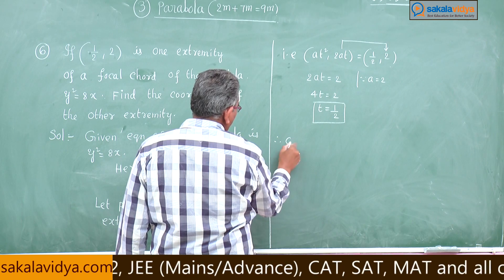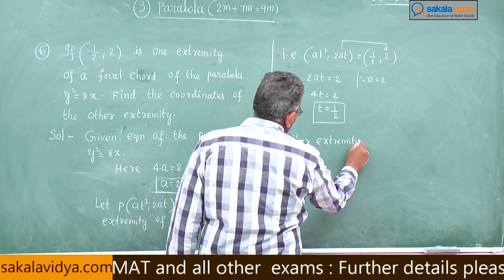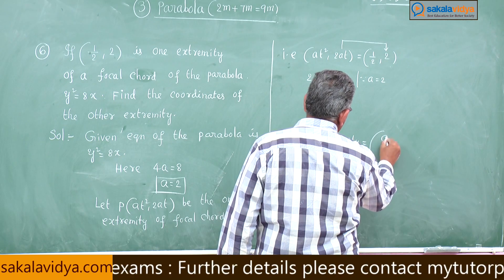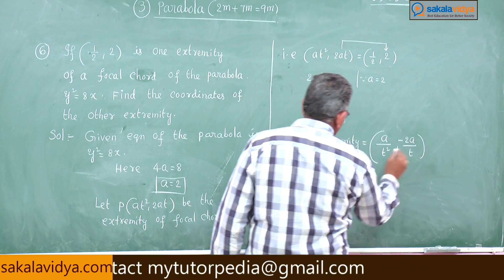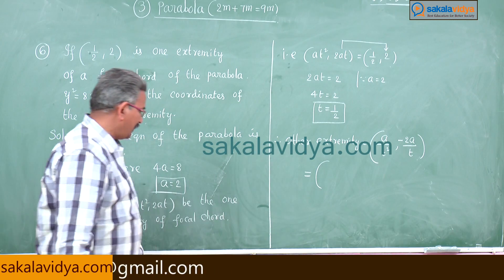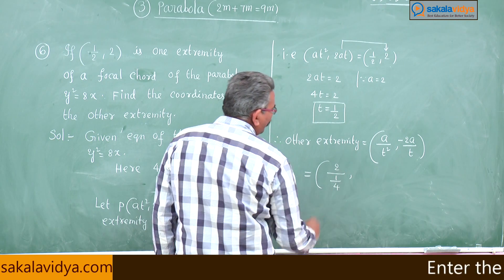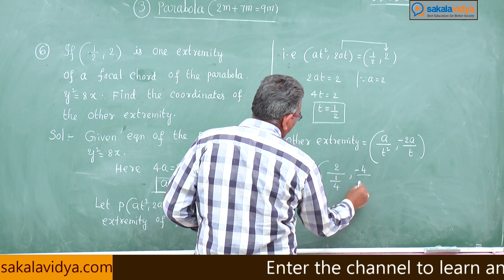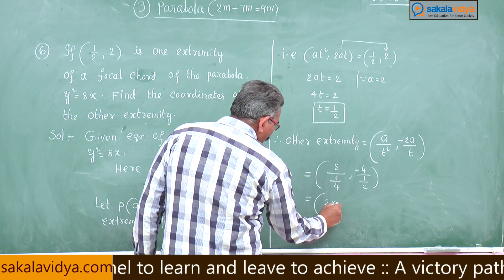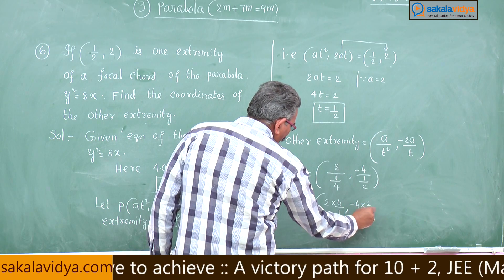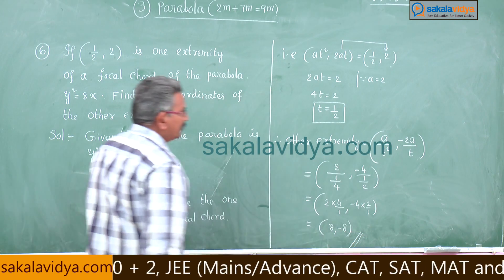Therefore, the other extremity is (a/t², -2a/t). With a = 2 and t = 1/2, this gives 2×4/1 = 8 and -4×2/1 = -8. So the other extremity is (8, -8).